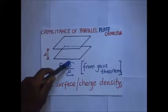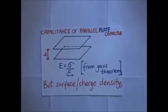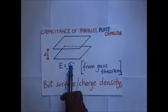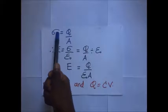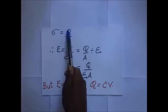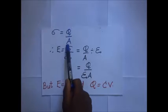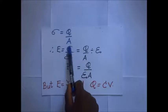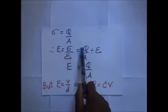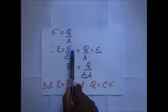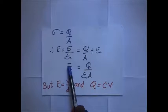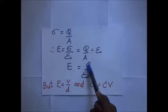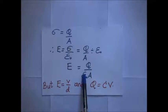We know that the surface charge density on the surface of the plates is equivalent to the charge on those plates, Q, divided by the area. So the surface charge density is equal to Q over the area. Substituting this into our expression, the value of E becomes Q over A — the surface charge density — divided by the permittivity. We end up with the expression: E equals Q divided by permittivity times the surface area of the plates.